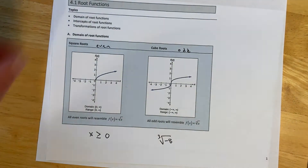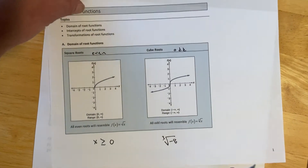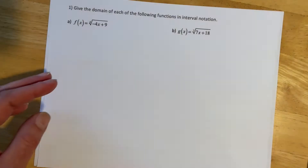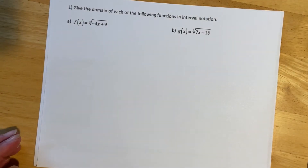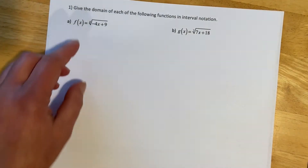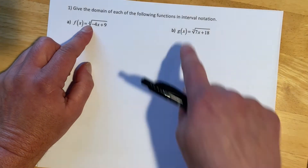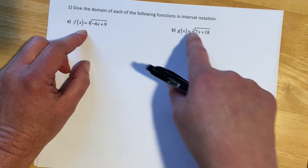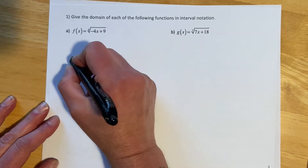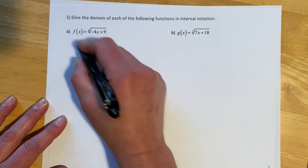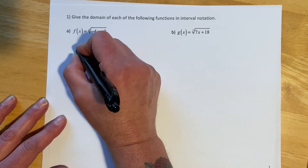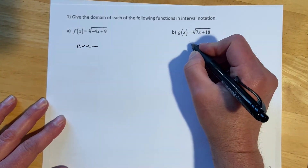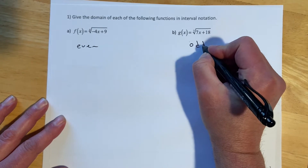Let's see what that will look like with a couple of examples. For these two we're asked to find the domain of the functions. This one is the fourth root and this one is the seventh root. So this is going to be an example of an even root and this one is going to be an example of an odd root.